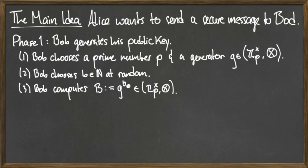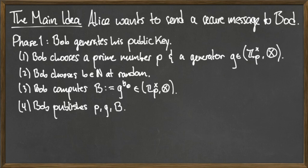Finally, Bob publishes his prime p, generator g, and quantity capital B, but he keeps the natural number little b a secret.